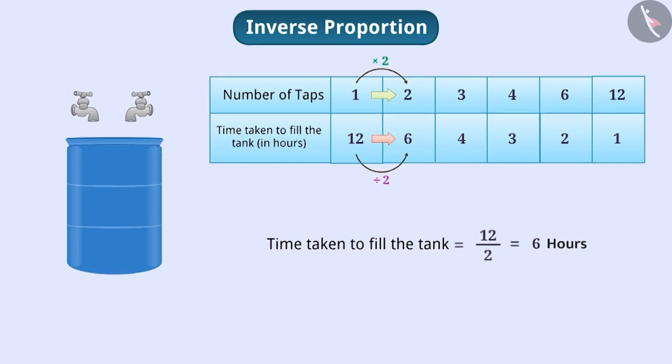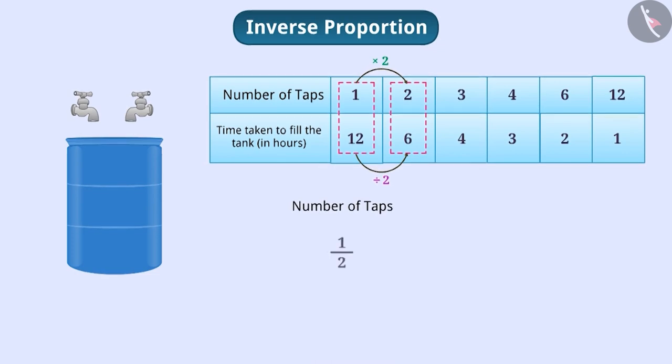In this way, we see that the ratio of the number of taps in terms of the first and second position and the time required to fill the tank is inverse of each other. In any case, if we multiply the number of taps and the time required to fill the tank, then the product remains a constant.